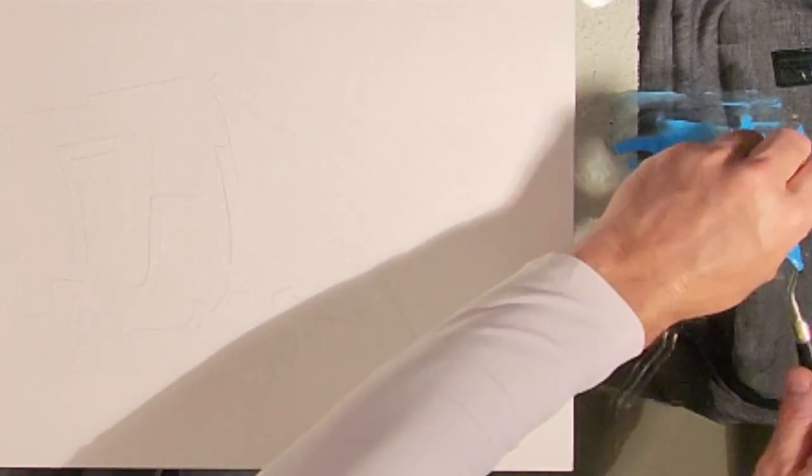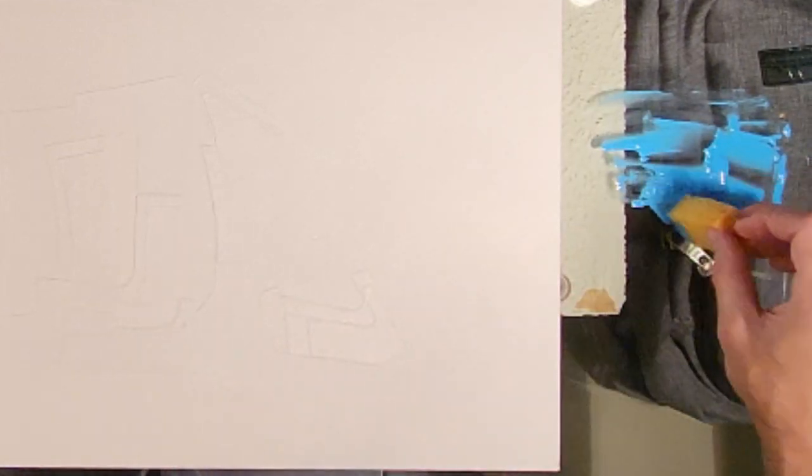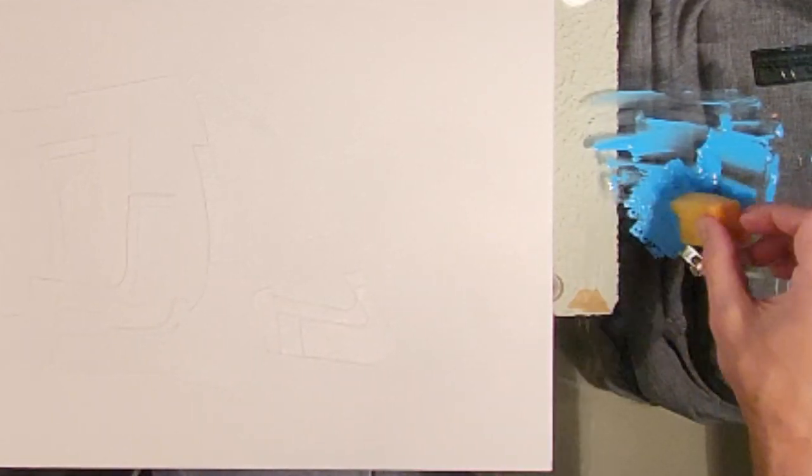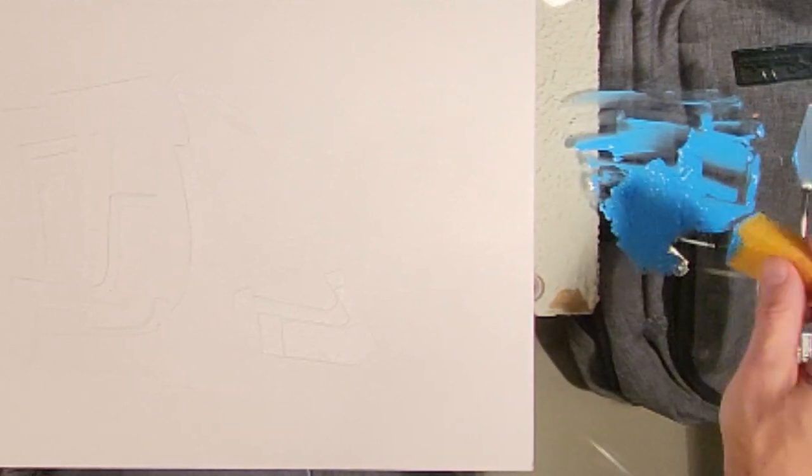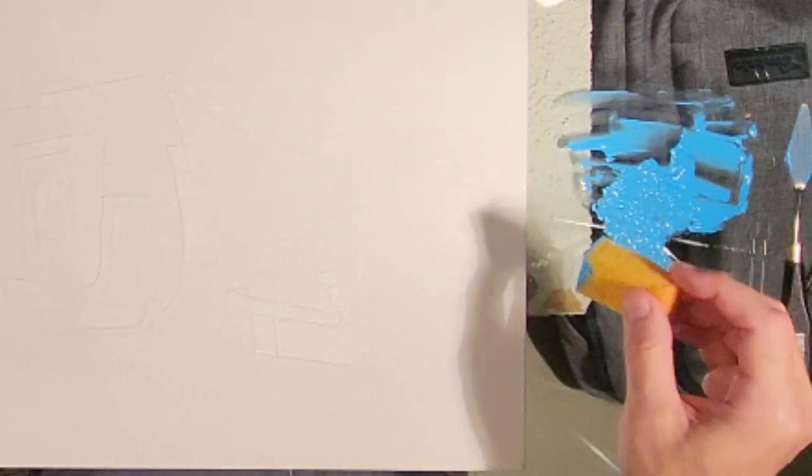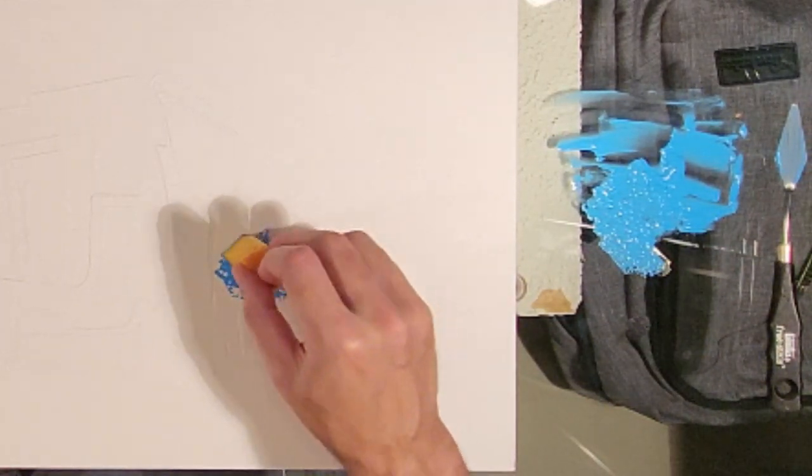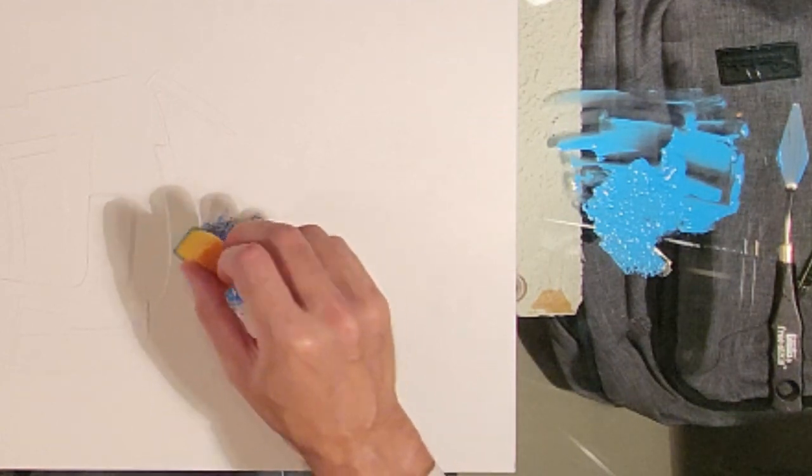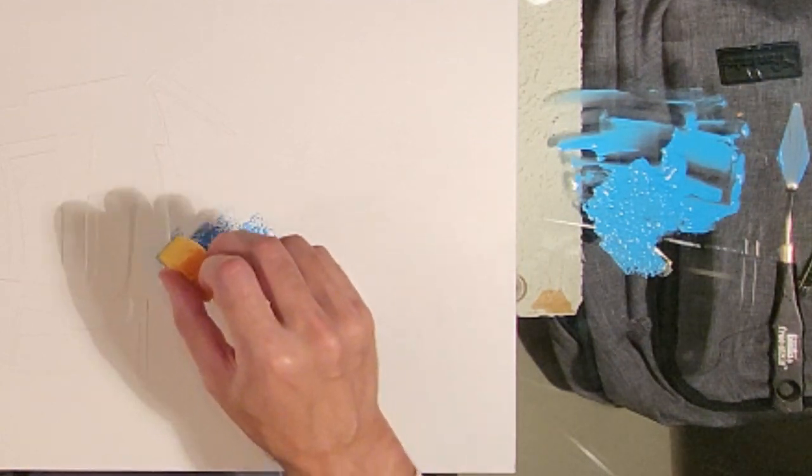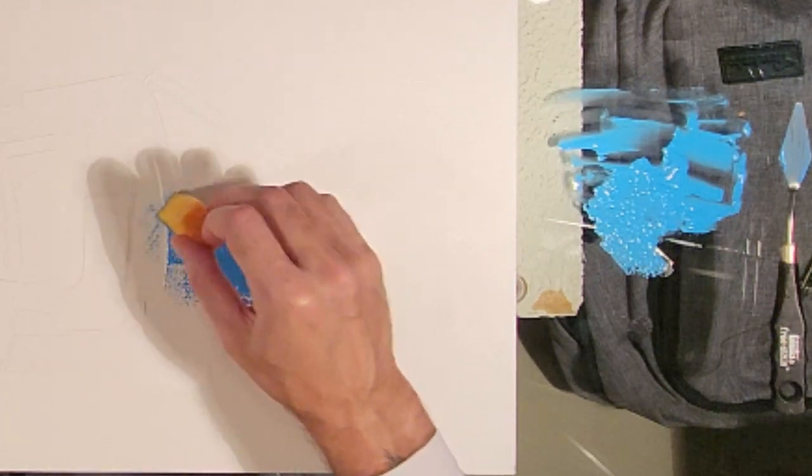So in some places I will go heavier and in other places I will try to apply it much lighter. Now the shape of the sponge is allowing me to do a couple of things. The sponge in and of itself will give me more benefits than it will cause problems. And trust me, it will do both.